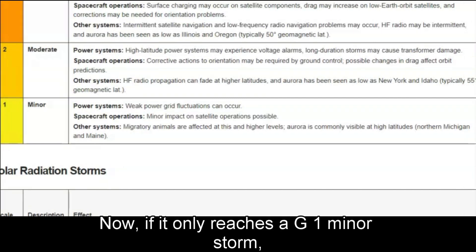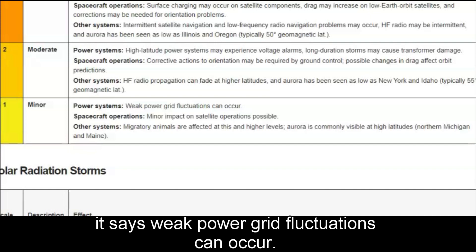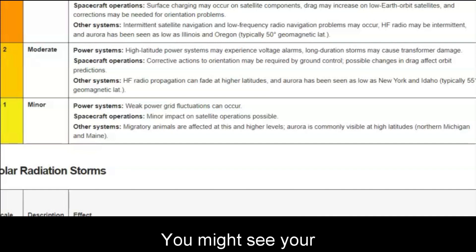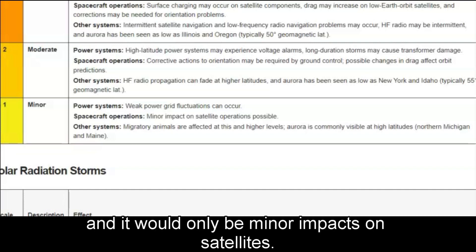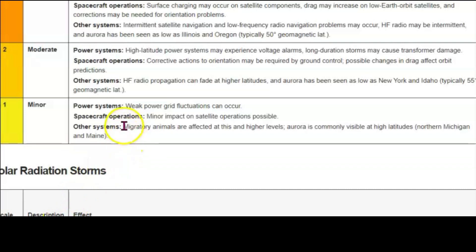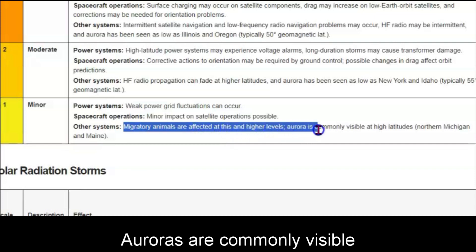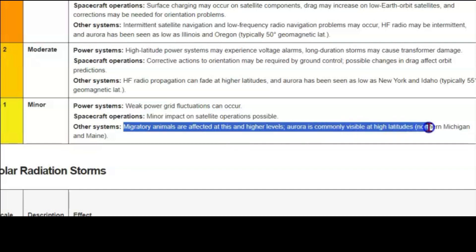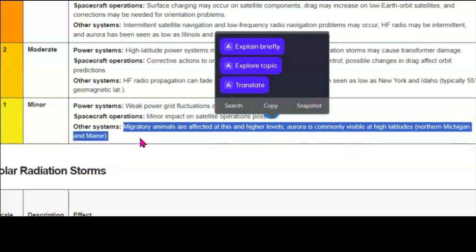Now, if it only reaches a G1 minor storm, it says weak power grid fluctuations can occur. You might see your power flickering and it would only be minor impacts on satellites. But this is interesting. Migratory animals are affected in this and high levels. Auroras are commonly visible at high latitudes such as Northern Michigan and Maine. I thought that was interesting. It's going to affect migratory animals.